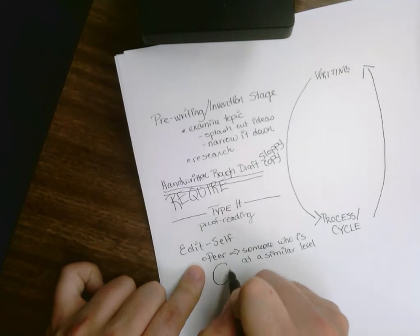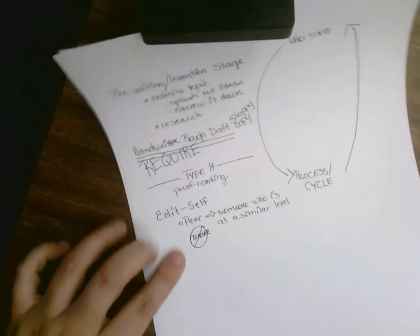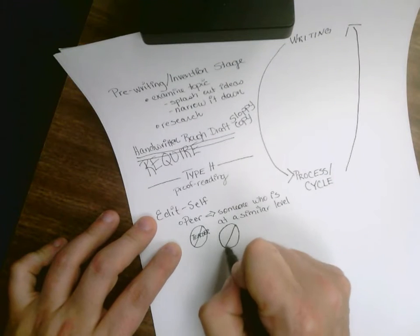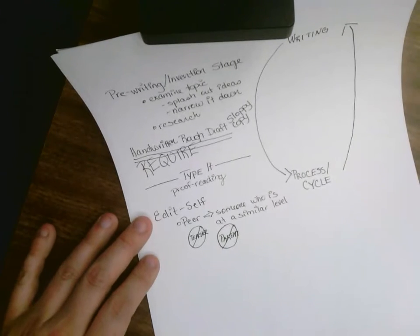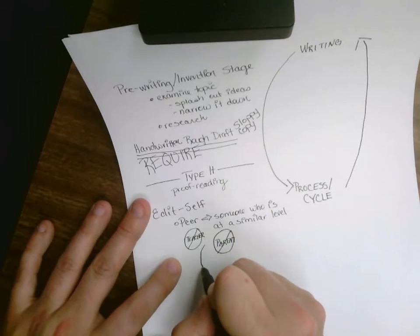This peer would not be your teacher. This peer would not be a parent. You start with the peer who is someone going to look at it that way, and then you can go up to a higher level than a peer.